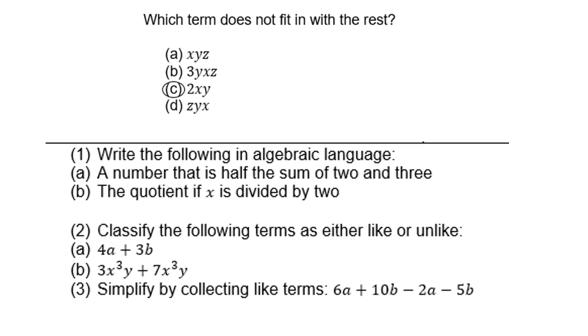These following three examples are for you to try at home, and the solutions you will find on the next page. Write the following in algebraic language: A number that is half the sum of 2 and 3. The quotient of x is divided by 2. Classify the following terms as either alike or unlike: 4a + 3b, 3x³y + 7x³y. Simplify by collecting like terms: 6a + 10b - 2a - 5b.